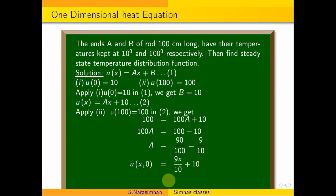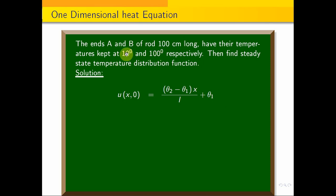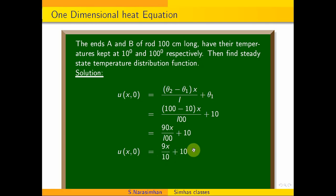This result can also be written as u(x) = 90x/100 + 10, which matches the general formula u(x) = (θ₂ - θ₁)x/L + θ₁.